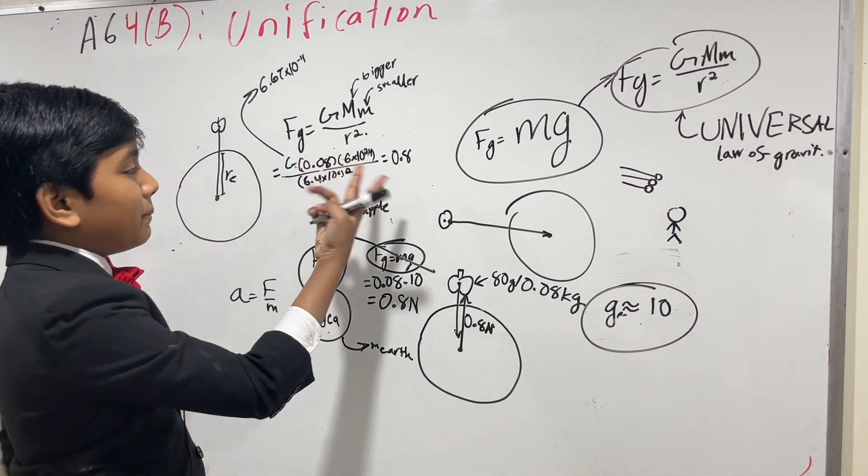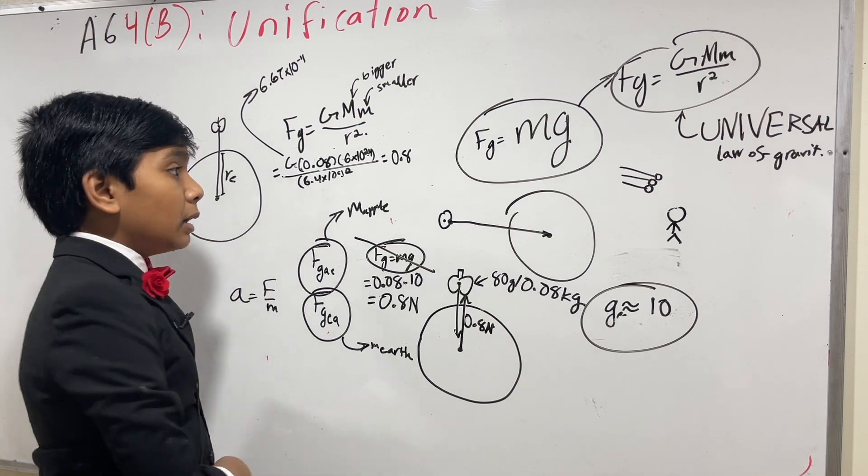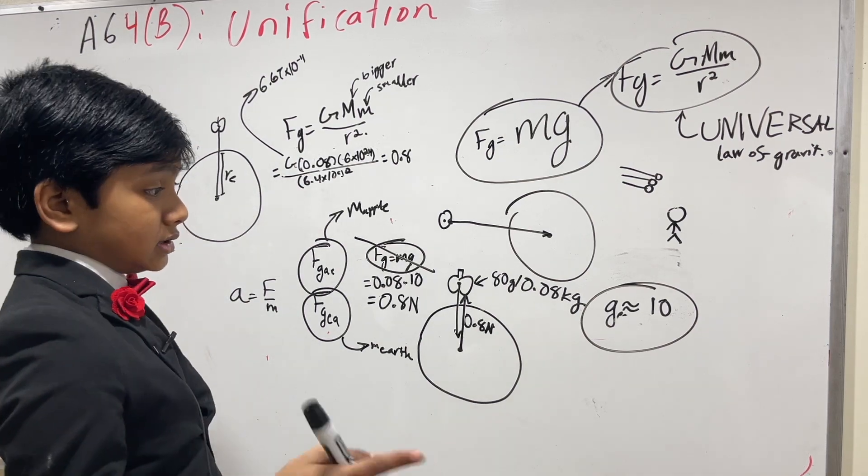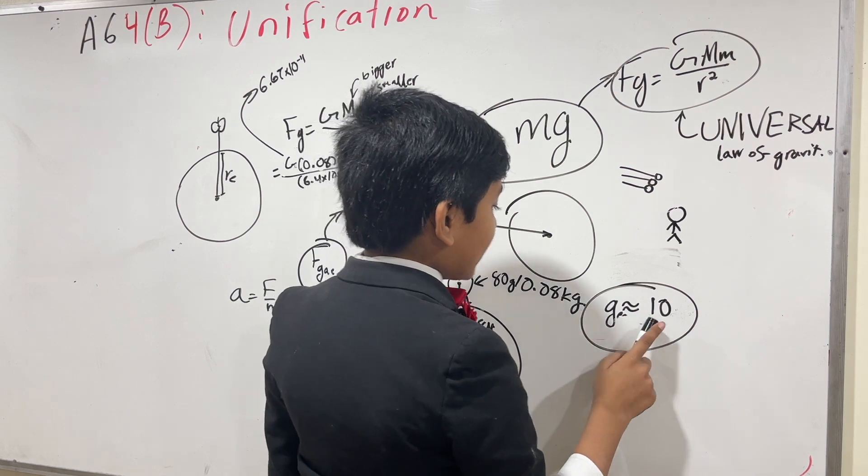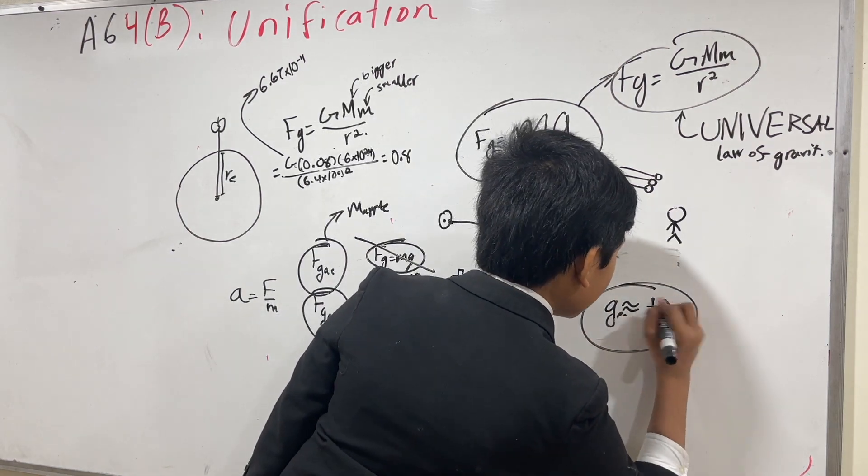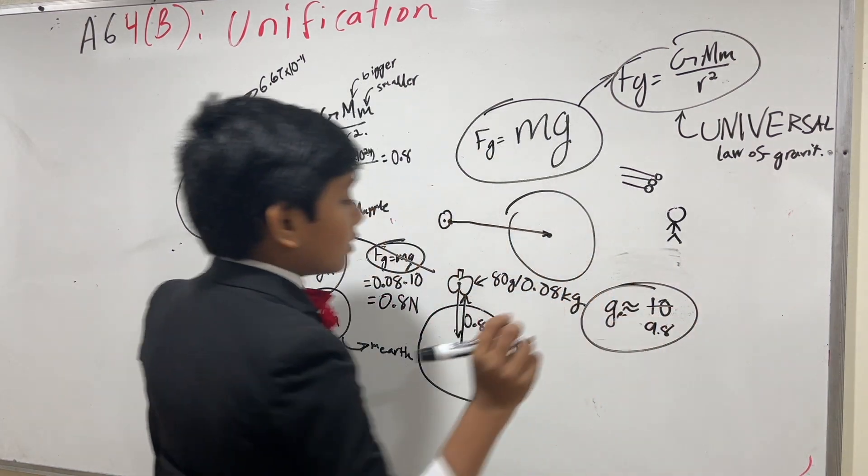So no matter which way you swap it, this is always going to be 0.8. Or, something a little smaller than that, because g not exactly 10, g is less than 10 and actually 9.8. So now, how can we find g using this equation?